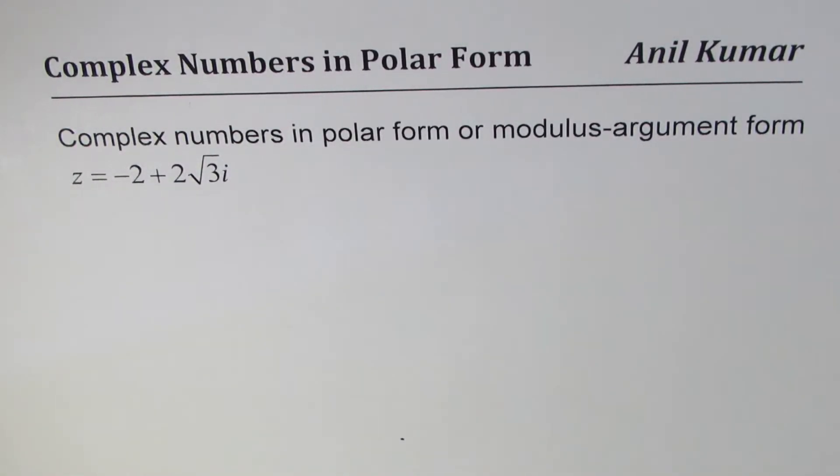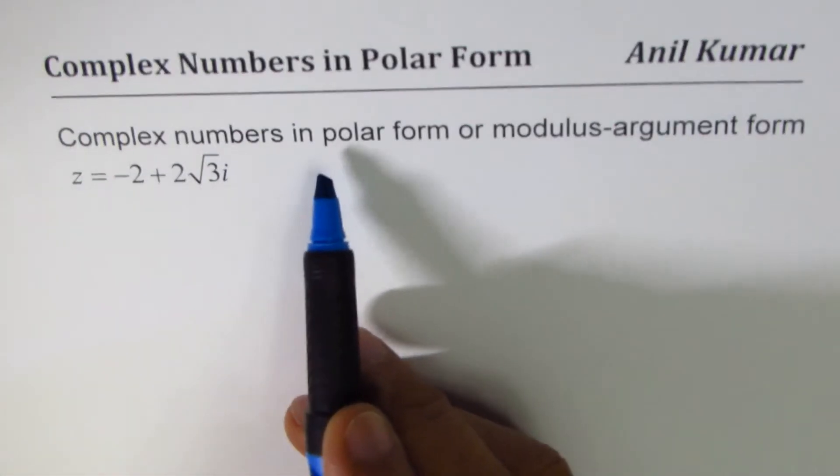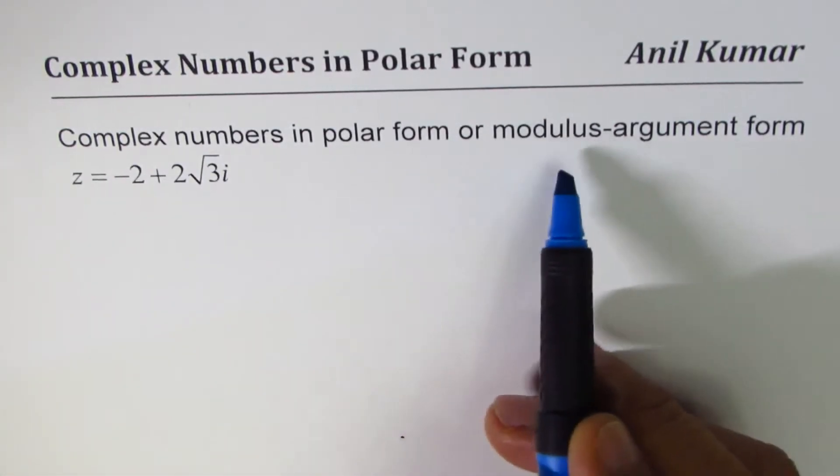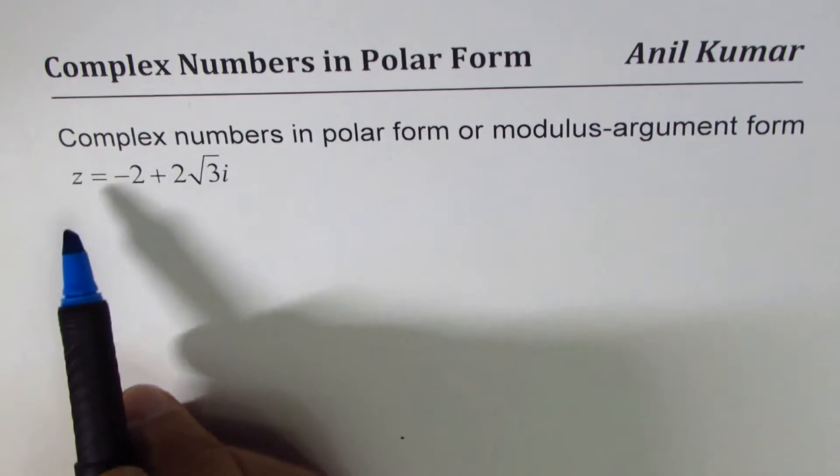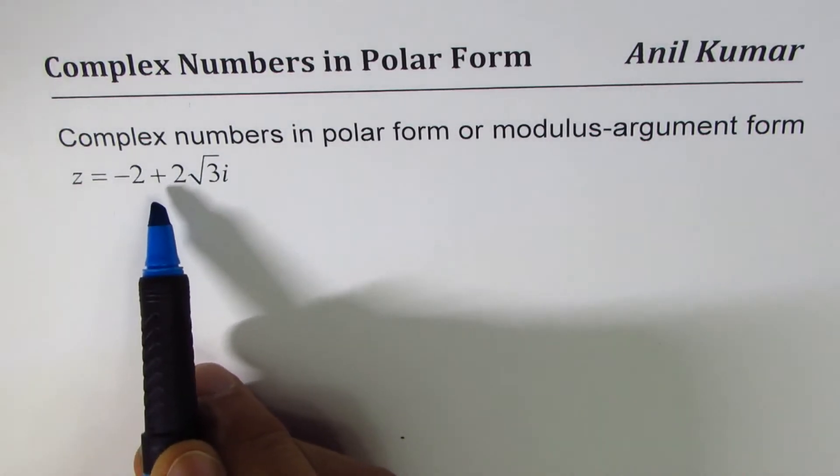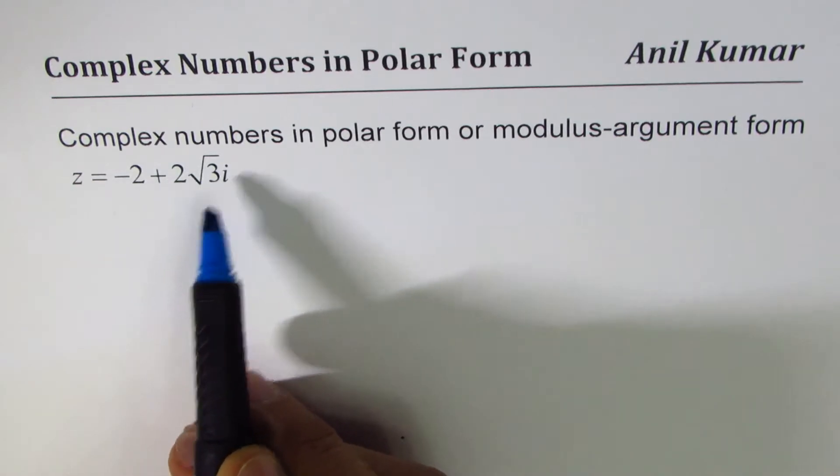I am Anil Kumar and in this video we will understand how to write a complex number in polar form or modulus argument form. The complex number given to us is z equals minus 2 plus 2 square root 3 i.